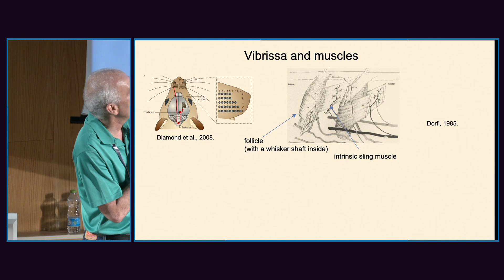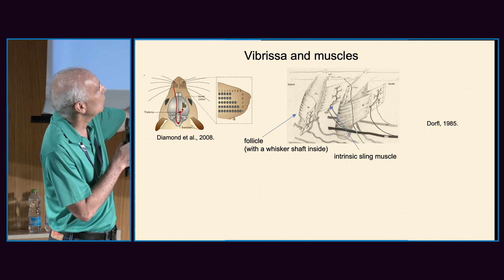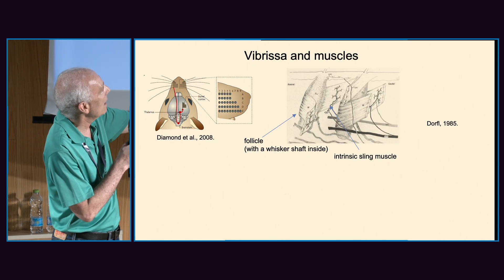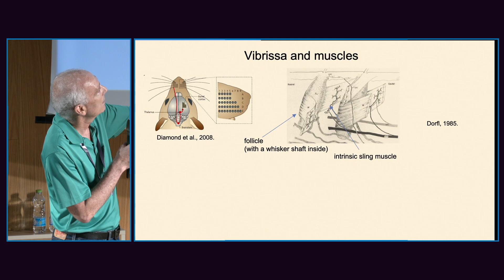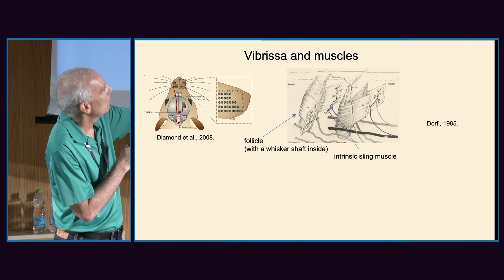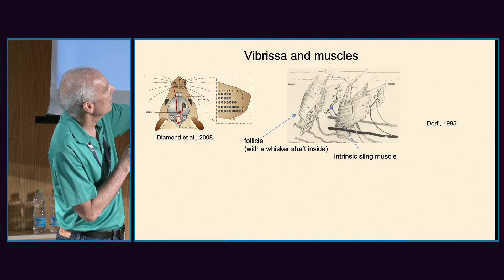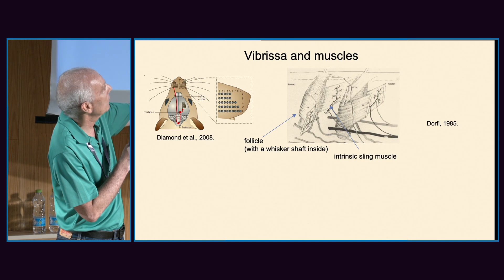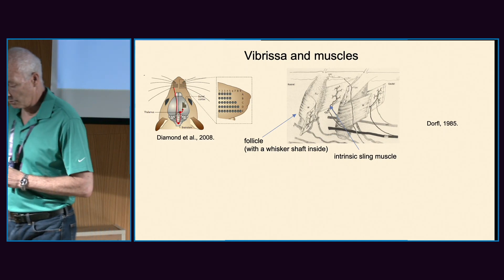To understand this, we need to look at the musculature of the whisker. The whiskers are moved mostly by intrinsic muscles. If these are two whiskers — these are the shafts, this is the follicle, the shaft within the follicle — each muscle connects to an adjacent whisker, connecting this whisker from the top and the other from below. When this muscle contracts, the shaft rotates and translates, and that's how you get whisking.